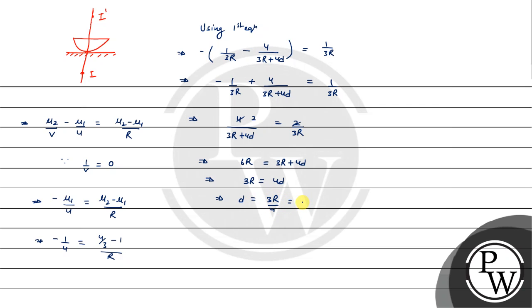Therefore d equals 3r upon 4. The question says radius is 4 cm. So d equals 3 upon 4 into 4, and the value of d is equal to 3 cm. This is our final answer.